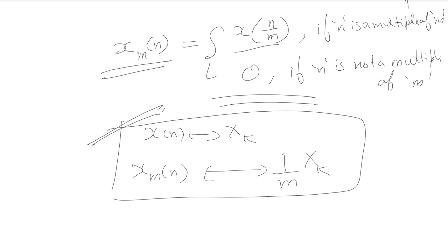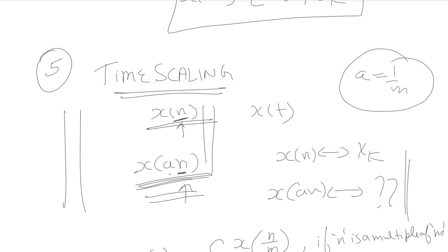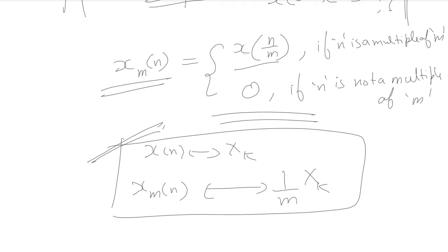To repeat the time scaling property: x[n] is any periodic signal scaled by a factor of 1/m. We represent the scaled version as x_m[n], equal to x[n/m] when n is a multiple of m, and 0 otherwise. If x[n] and x[k] are the Fourier series pair, then x_m[n] has Fourier series coefficient (1/m)·x[k]. This is the time scaling property of discrete time Fourier series.